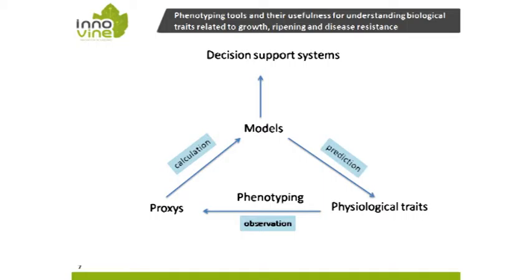Phenotyping is able to give a good account of physiological traits, and so it's transformed into proxies that must be accurate, cheap, and reliable. These proxies are used to elaborate and design models — we will have an example of that in the next talk by Zhang Wu Dai. These models are used to derive decision-making tools, and the models must have a predictive value — they must be able to predict the physiological traits of a grapevine. There is a loop to validate and improve them, and models are calibrated and validated before use.